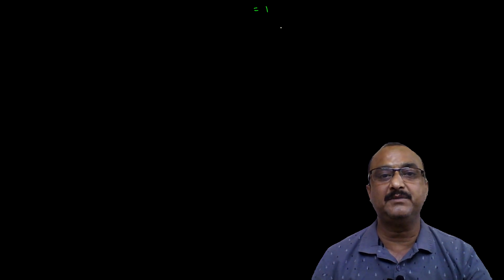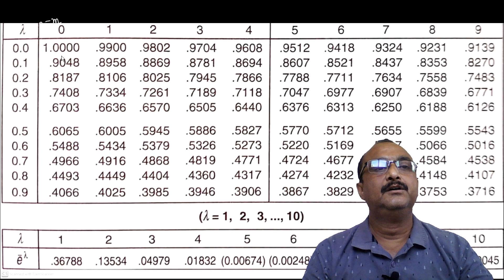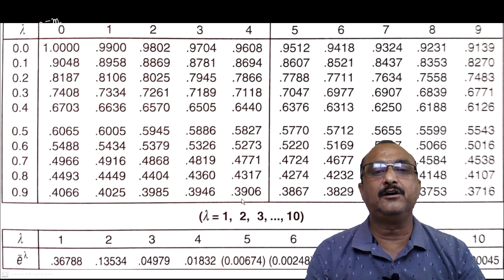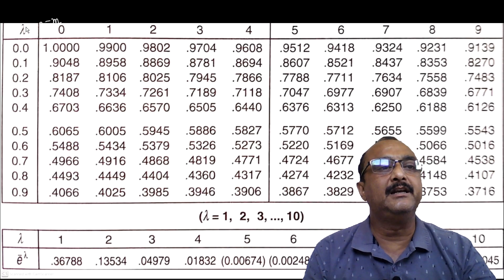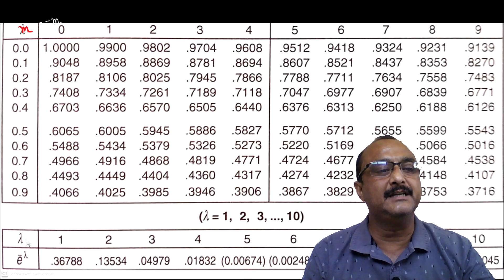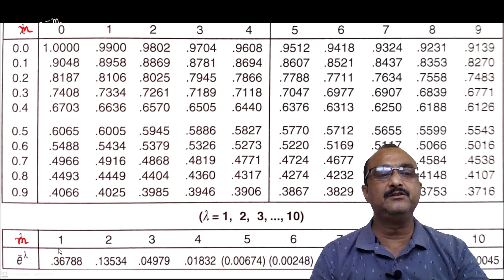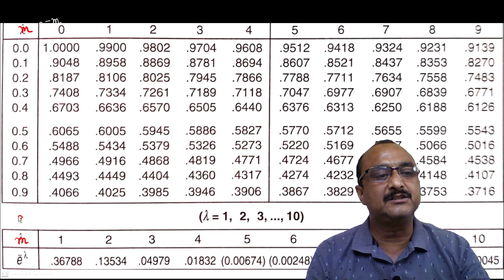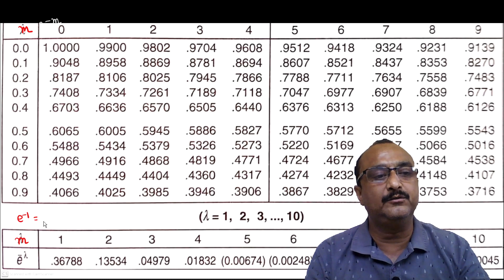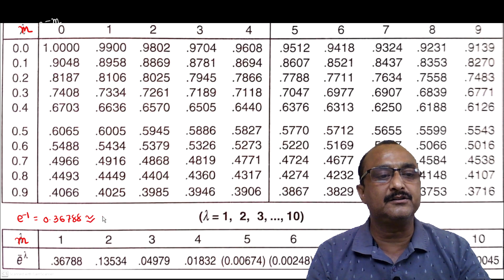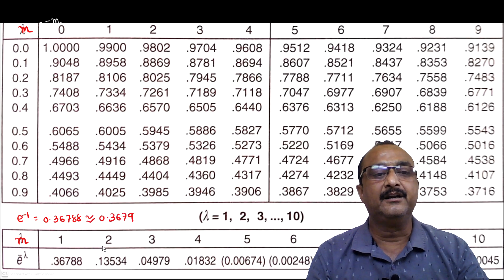Now we talk about how to find the value of e raised to minus m. We use a Poisson log table. In the table, lambda represents M for us. For integer values: e raised to minus 1 equals 0.36788, and e raised to minus 2 equals 0.13534. For e raised to minus 7, the value from the table is 0.00091.